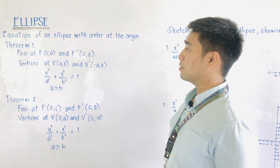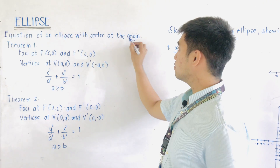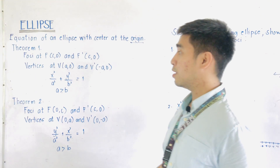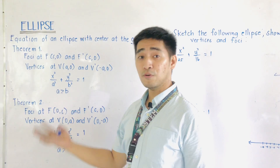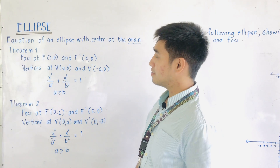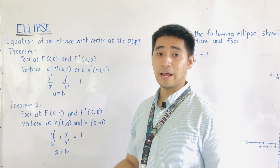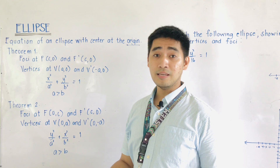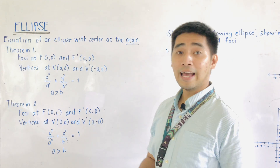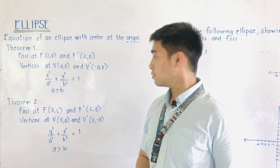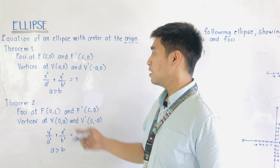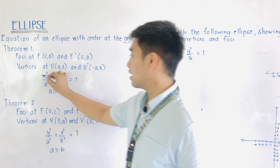The equation of ellipse with center at the origin has two theorems. Theorem number 1 states that the foci are located at (C, 0) and F' at (-C, 0). The vertices are located at V at (A, 0) and V' at (-A, 0), and this is the equation.